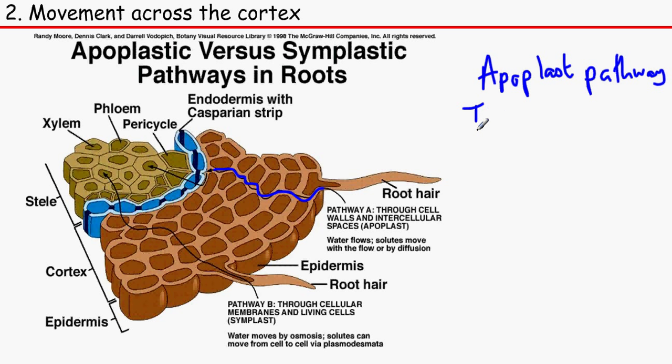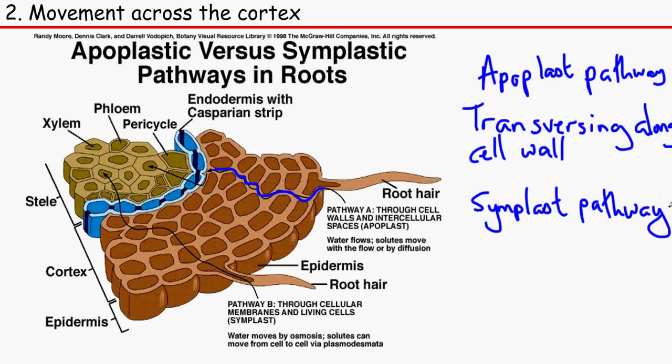The symplast pathway is basically the water enters the cytoplasm through the plasma membrane. It can also go through the tonoplast to the vacuole, but that's more of a vacuolar pathway. I'm going to merge these two together. The water can go through the plasmodesmata.